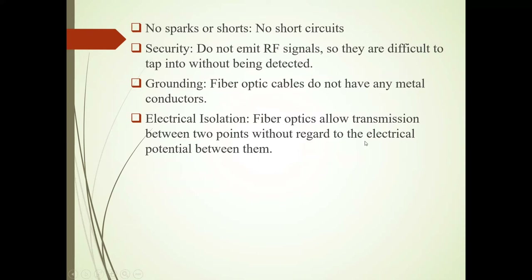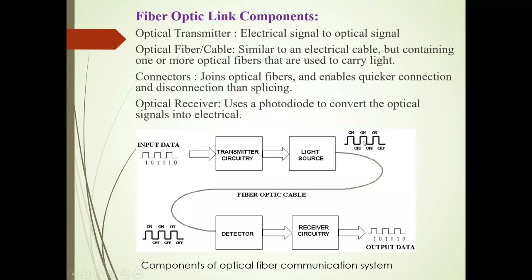Now we will see fiber optic link components. There are four components: optical transmitter, optical fiber or cable, connectors, and optical receiver. As shown in this image, input data is fed to the transmitter circuitry, then the light source transmits it along the fiber optic cable, then the detector and receiver circuitry process it, and we get output data.